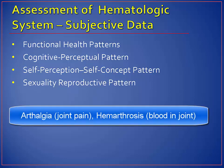Cognitive perceptual pattern — arthralgia or joint pain may indicate an autoimmune disorder such as rheumatoid arthritis, and may be caused by gout secondary to increased uric acid production as a result of a hematologic malignancy or hemolytic anemia. Aching bones may result from pressure of expanding bone marrow with diseases such as leukemia. Hemarthrosis, which is blood in the joint, occurs in patients with bleeding disorders and can be painful.